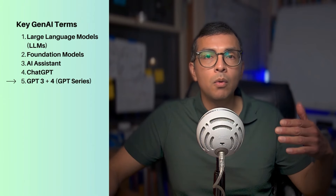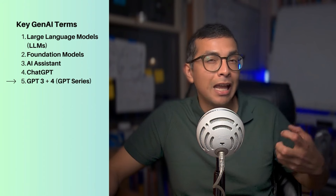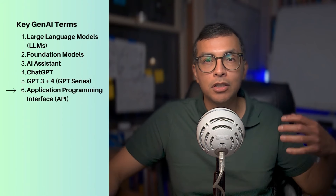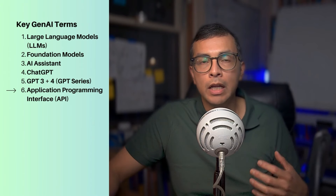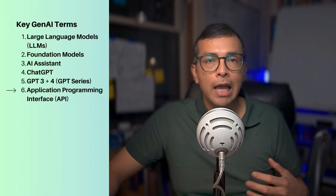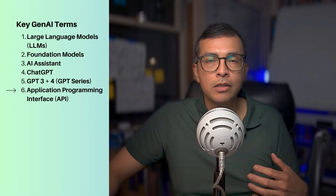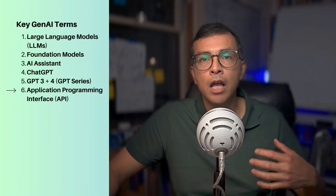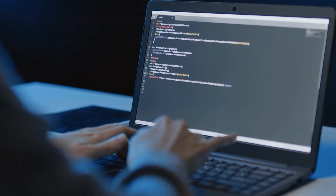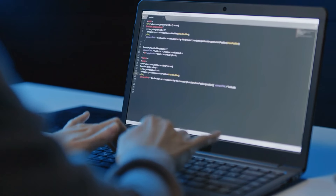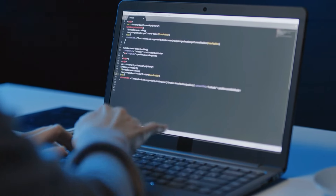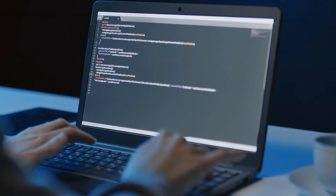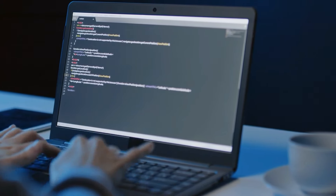OpenAI will only give you access to the underlying engine via the ChatGPT application or an API. An API is a way for developers to send their data to the OpenAI infrastructure and get a response from these models, in order to integrate them into a custom application.